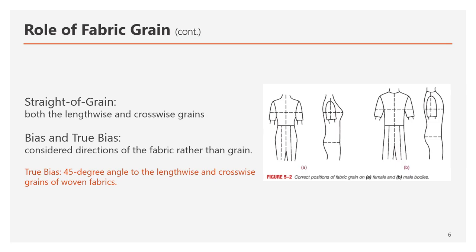About bias and true bias: any direction of the fabric that is not the lengthwise or crosswise grain is called bias. The true bias is the 45-degree angle to both the lengthwise and crosswise grains of woven fabric. Other angles — 10, 30, 60 degrees, and so on — are all still considered bias as long as the pattern pieces are placed on that angle.